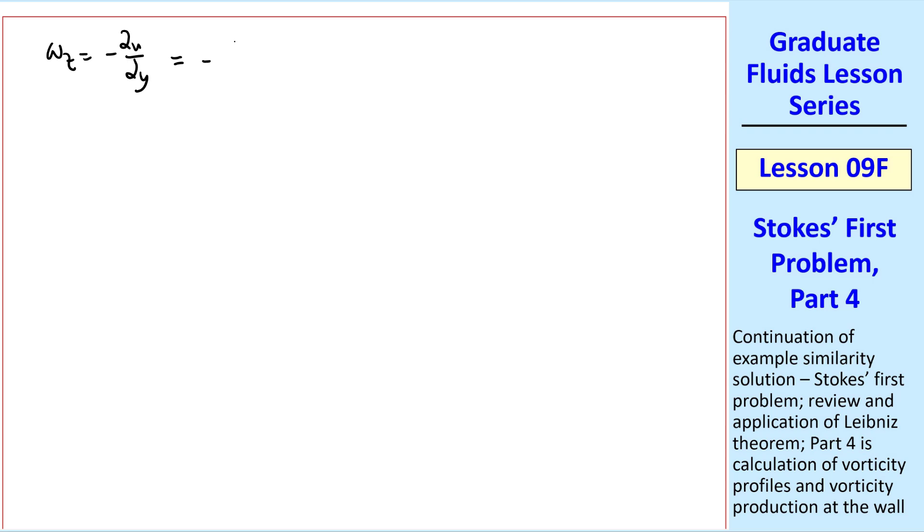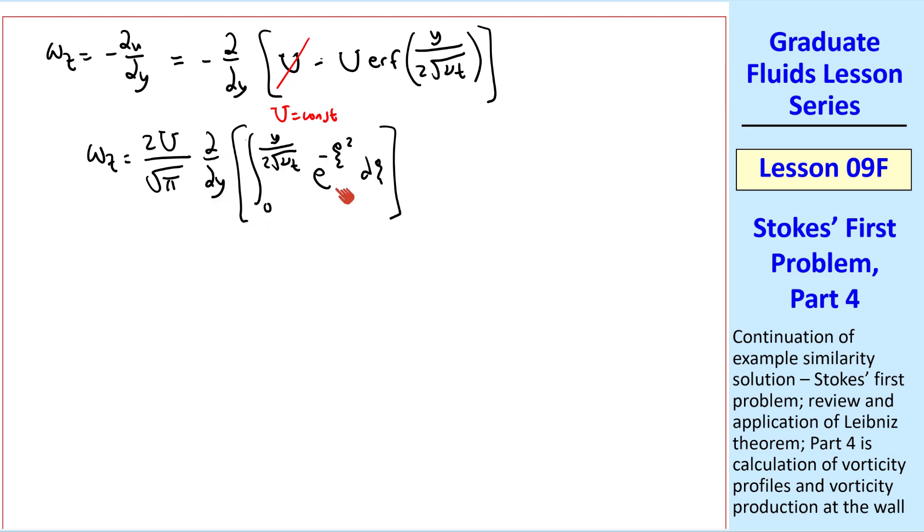Thus omega z is minus del del y of u minus U erf of y over 2 square root of nu t. But U is a constant, so its derivative is zero. Thus we rewrite omega z as 2U over square root of pi del del y of the error function, which we will write out by its definition, with this upper limit. Well now we have to take the partial y derivative of this integral. How do we do that? Well recall our old friend Leibniz theorem, which is relevant here since y appears in the upper limit of the integral, and we're taking the y derivative.